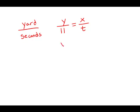Cross multiply, we get y times t equals 11x. And then to isolate t, we're going to divide by y.